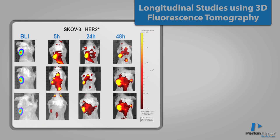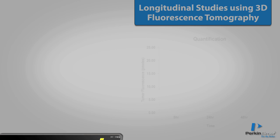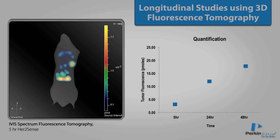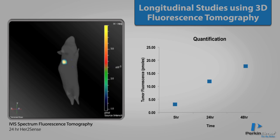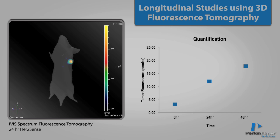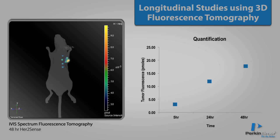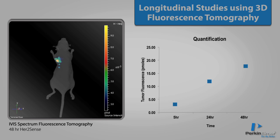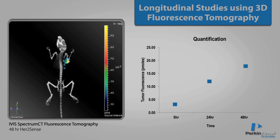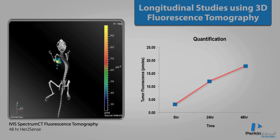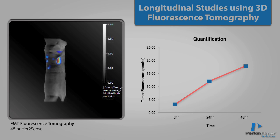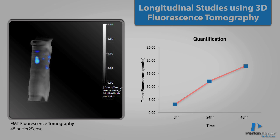In this example, SCOV3 tumor-bearing female SCID beige mice were injected IV with 40 micrograms of HER2Sense 645 agent and imaged at 5, 24, and 48 hours thereafter on the IVIS Spectrum. By measuring fluorescence intensity at each time point, HER2Sense agent concentration at the site of the tumor was calculated, showing an increase in tumor fluorescence over time. A parallel study was done in the FMT with similar results.